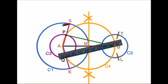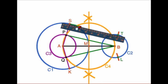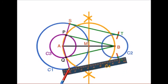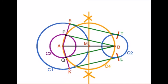Now join ST and KL. Students, you can observe that line ST is equal to line PB, which is also equal to QB and KL. Here, ST and KL are both the required direct common tangents to circles C1 and C2.